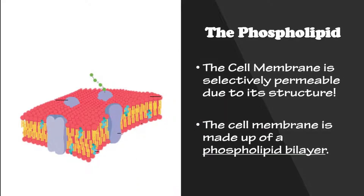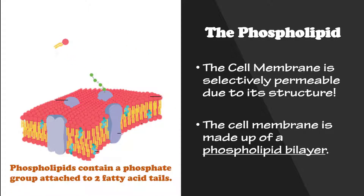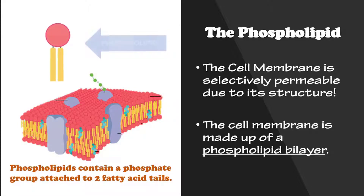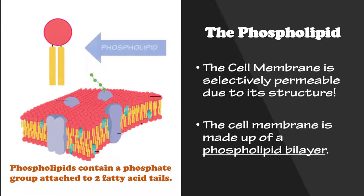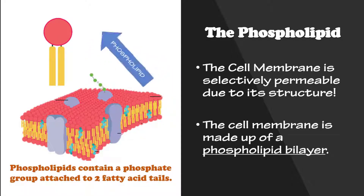The cell membrane is selectively permeable due to its structure. The cell membrane is made up of a phospholipid bilayer. Phospholipids contain a phosphate group attached to two fatty acid tails. Let's see why this is so important.